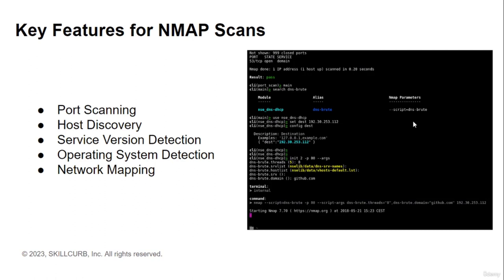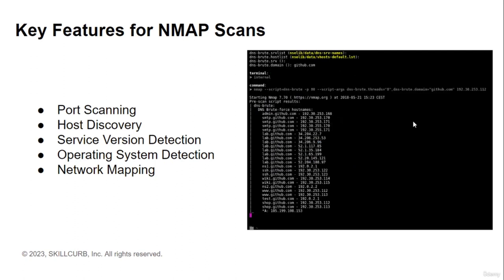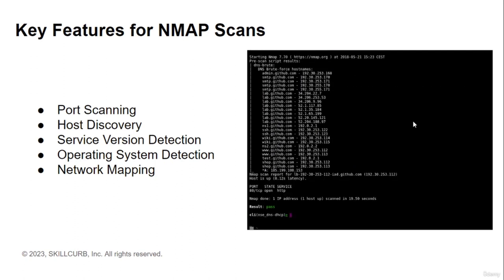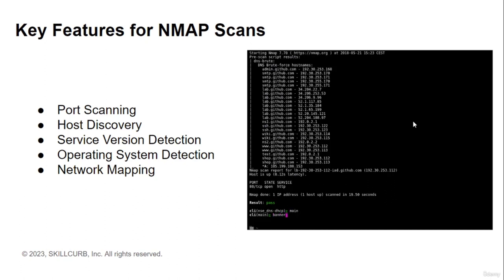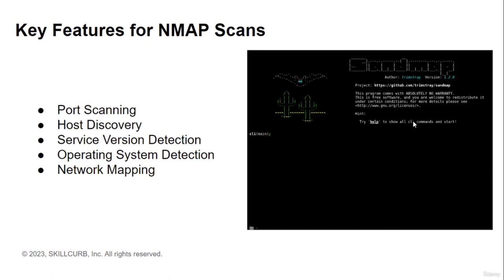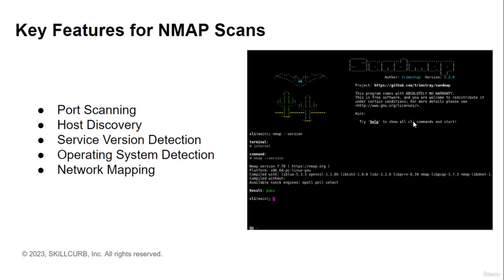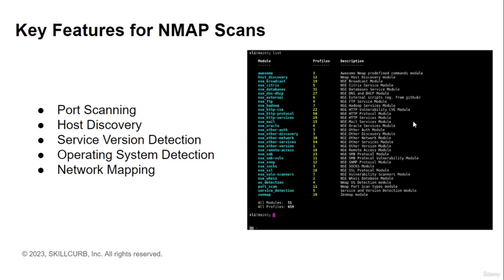All in all, we use Nmap to explore networks and perform security audits. With Nmap, users can effortlessly discover hosts and services on a computer network, detect operating systems, identify open ports, and collect information about different network devices. In the next video we'll set up and explore more about Nmap and how it actually works.